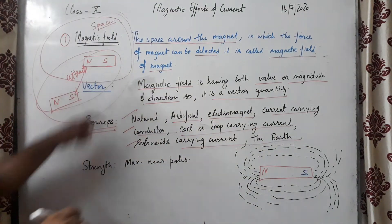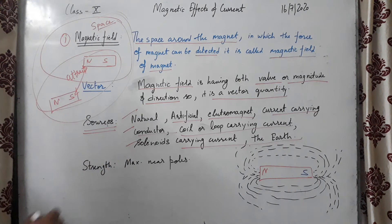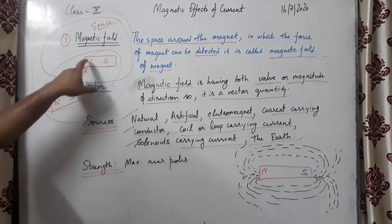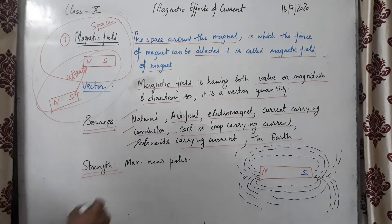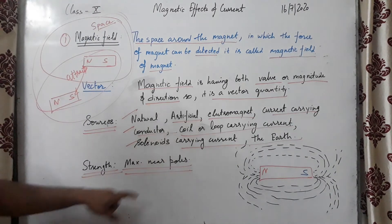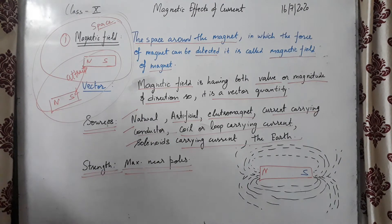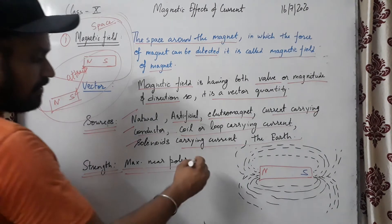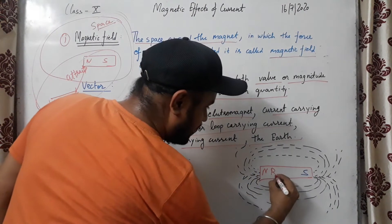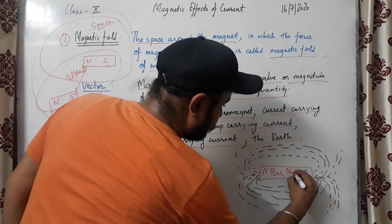The strength of the magnet is maximum near its poles. To understand this, we consider a bar magnet — a bar-shaped magnet.